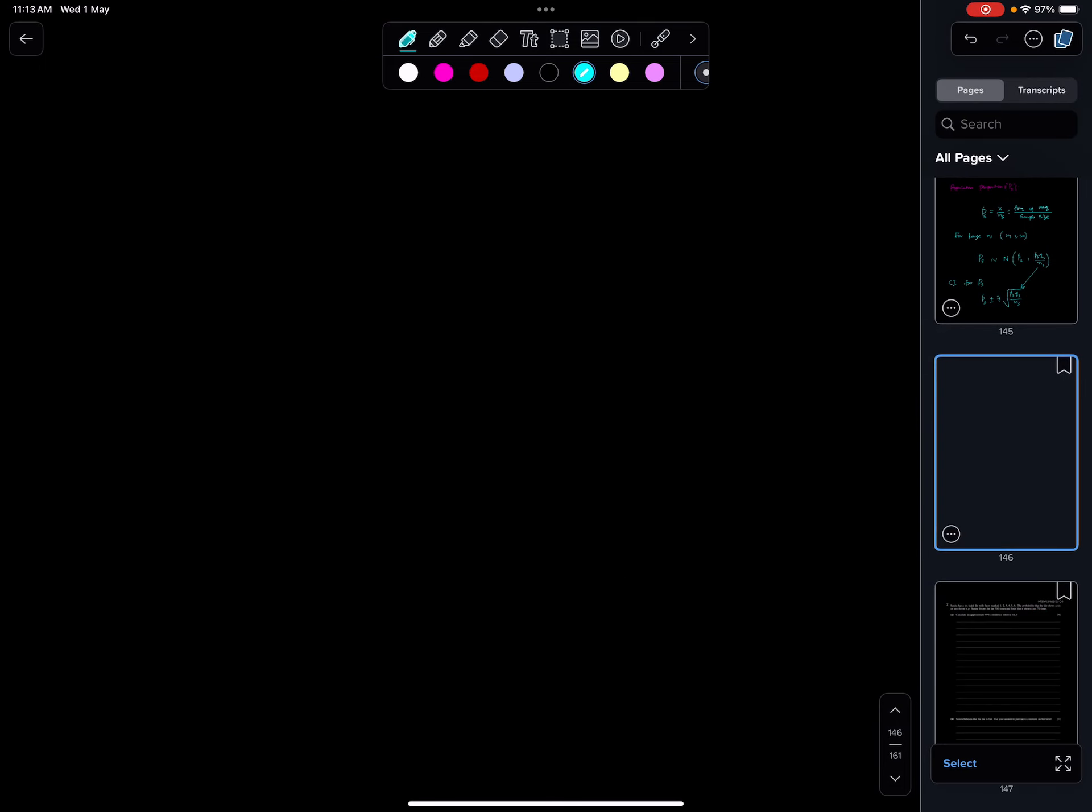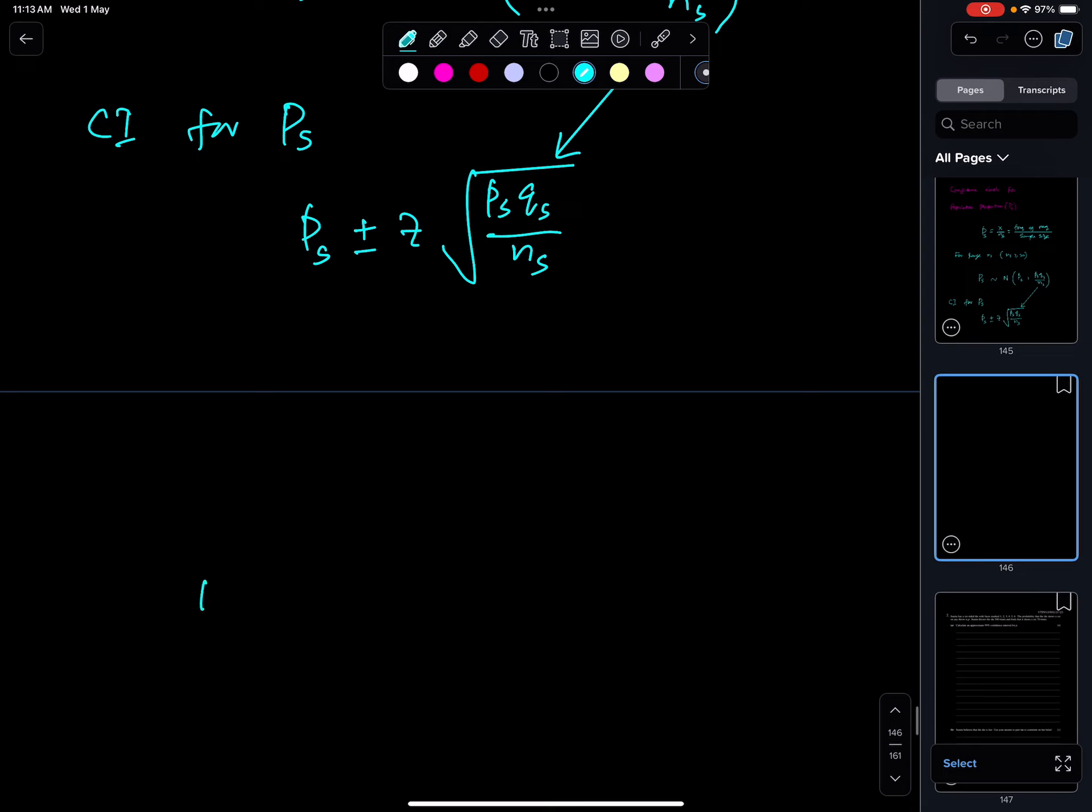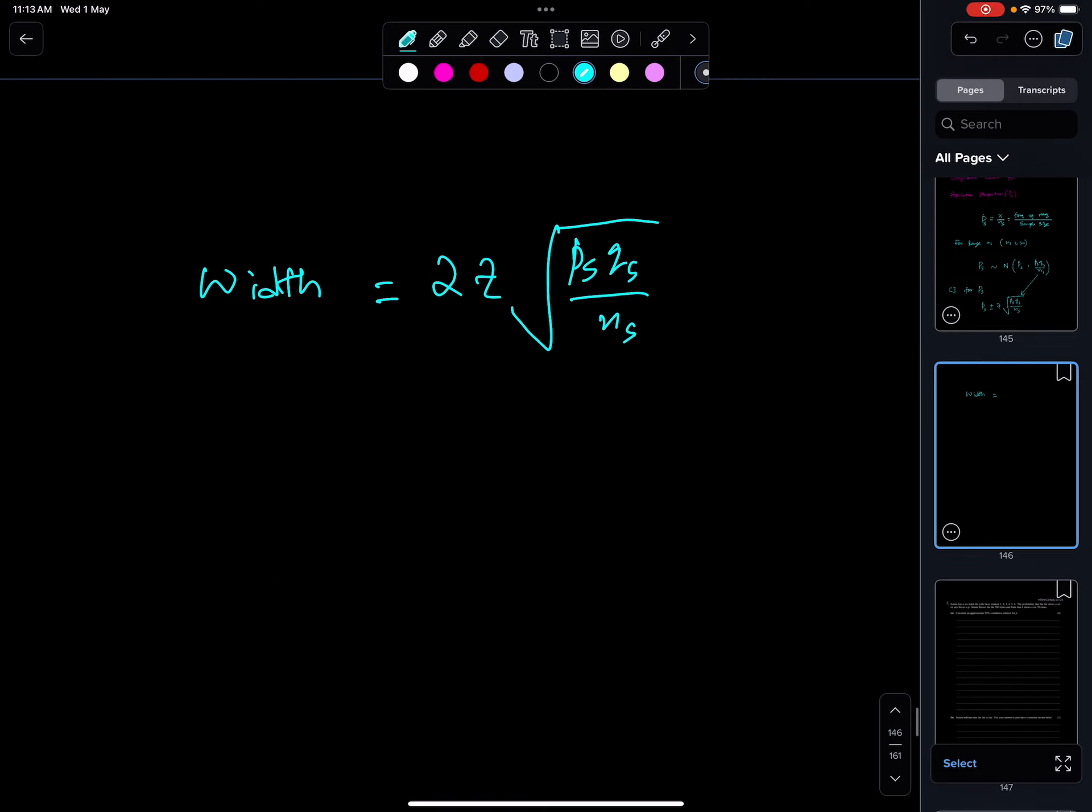Now width of PS, which is very simple. You just need to multiply this by 2. So 2Z square root PS QS over NS, where QS is 1 minus PS.